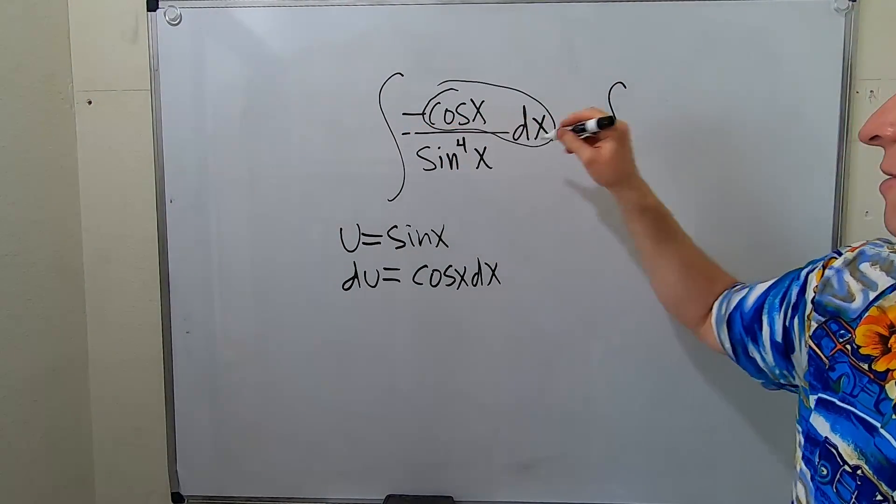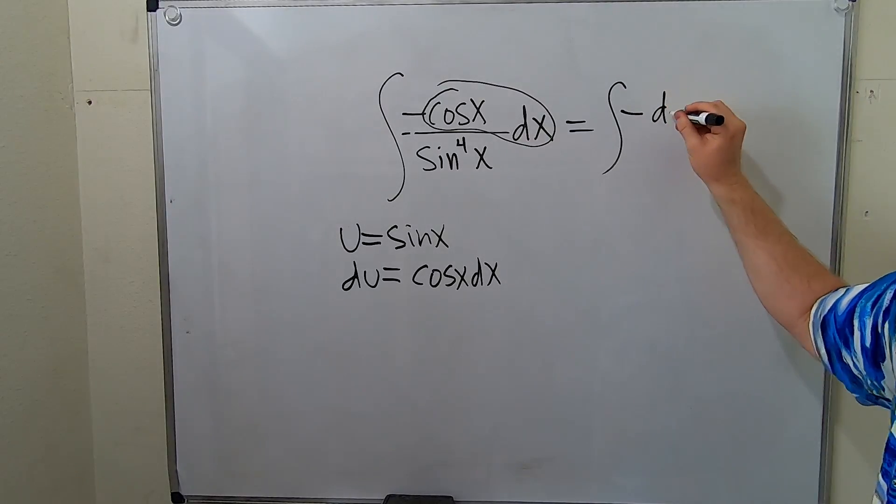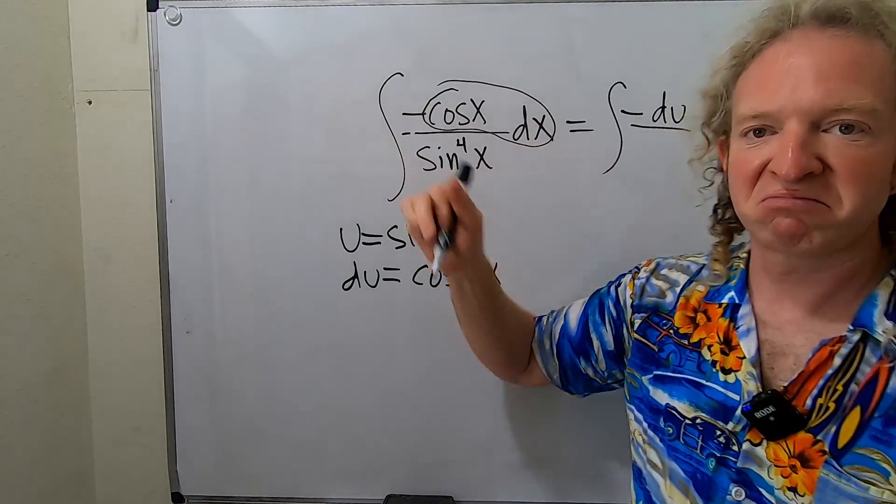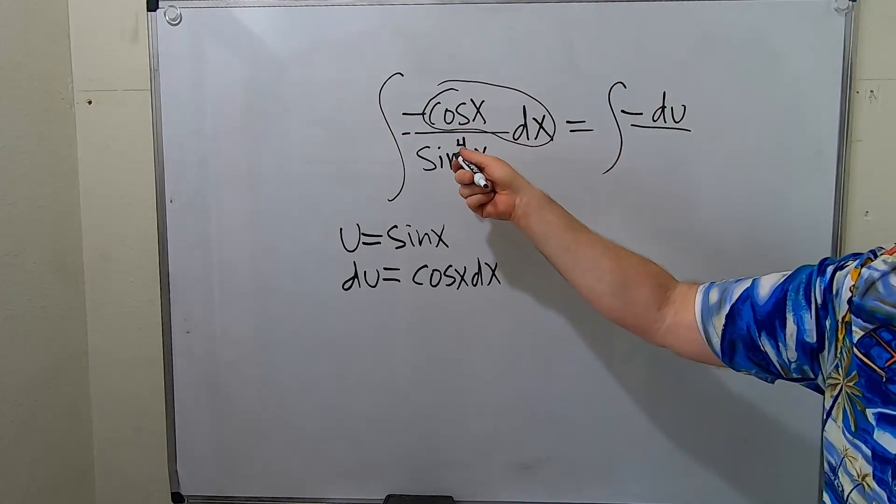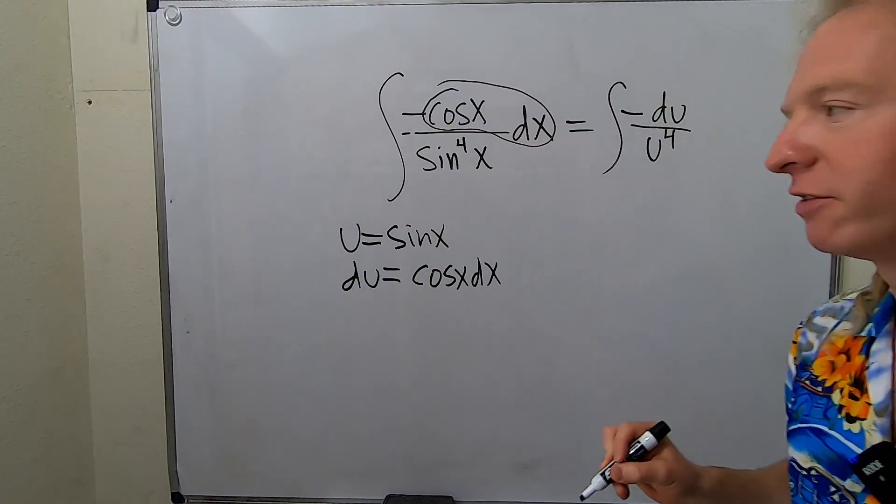So let's leave that negative sign there, and then this cosine x dx is du. The negative sign just hangs out, and then this is sine x to the fourth power, so it's u to the fourth power.